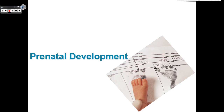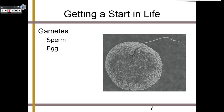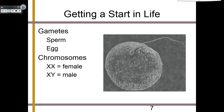We are starting with prenatal development. We all start out as two separate things known as gametes — a sperm and an egg — and the two combine. Chromosomes can be either XX, meaning female sex characteristics, or XY, meaning male sex characteristics. However, as you will see, this is not always the case. As we grow, we do what's called maturation — we mature and grow into a full-fledged human.